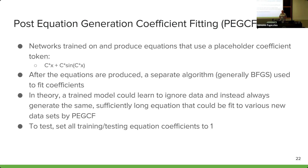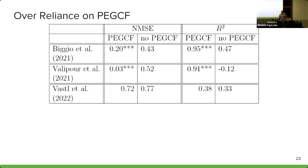In theory, a trained model could learn to ignore the data and just produce the same sufficiently long equation that could be fit to any new data set using coefficient fitting after equation generation. To test this, for all training and testing equations we set their coefficients to one, so if coefficient fitting produces any coefficients other than one, it is not producing the right coefficient. We looked at NSR network performance when coefficient fitting is present versus when it is denied, and across two of our numeric metrics and all networks — with the exception of VASL — there is a significant improvement when coefficient fitting is used.